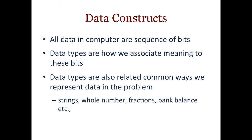All the data in the computer are a sequence of bits. The data types are how we associate meaning to these bits. If you say this part of memory is an int, it will have a certain meaning — the bits represent an int — which is different than if you say these bits are a floating point value. You can't just interpret the bits as a floating point and also look at it as an int, because they have different ways that they use the bits. Every piece of data in the computer — you have to know what type of data it is in order to associate meaning to it.